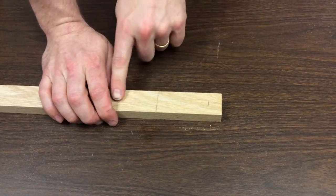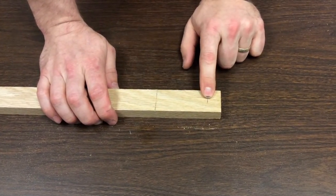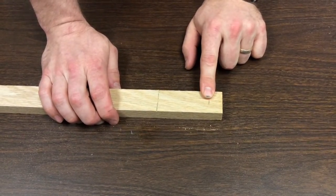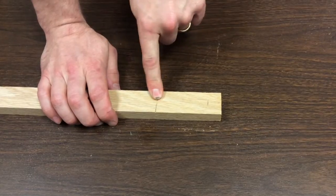Once all the fret locations are cut, move on to drilling the hole for the tuner. You need to drill this hole before gluing in the frets.